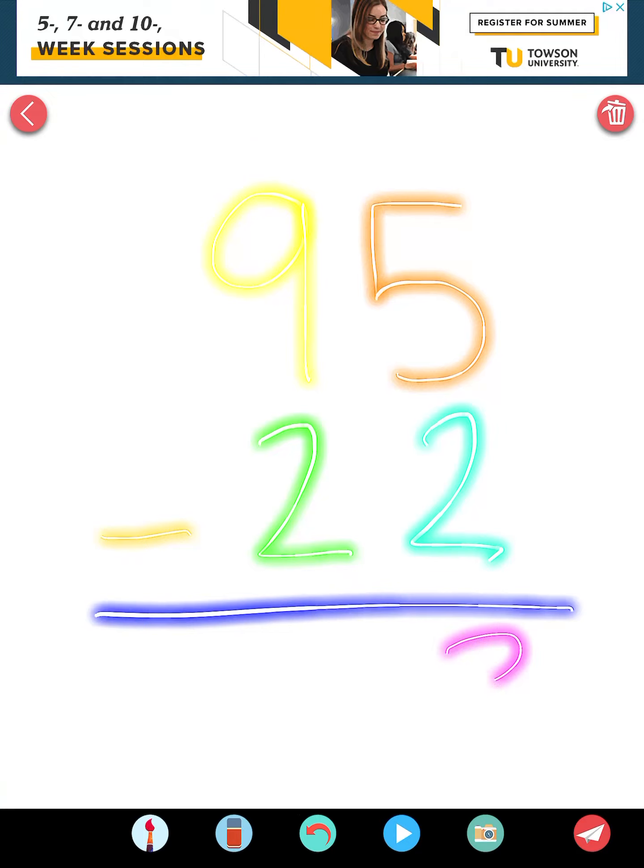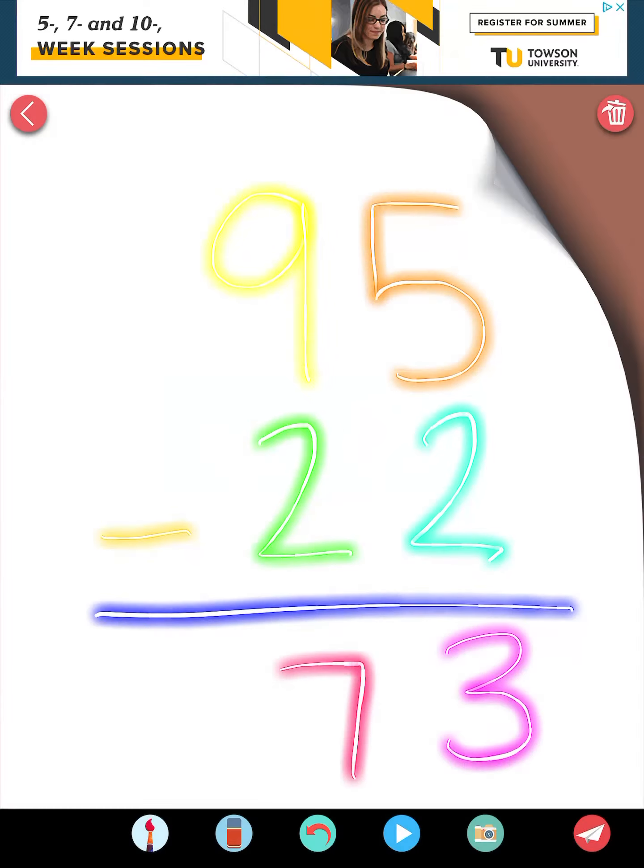Okay, 5 minus 2 equals 3. And 9 minus 2 equals 7. So 95 minus 22 equals 73. All right, our last one. Let's do a challenge.